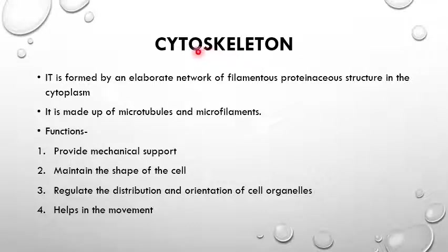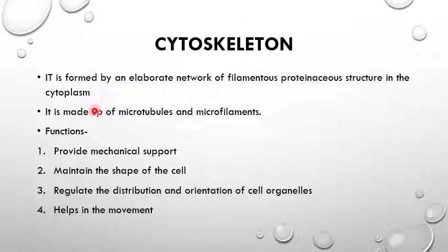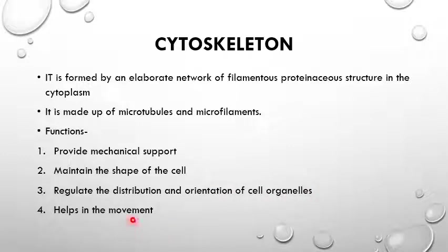The next organelle is the cytoskeleton. It is formed by an elaborate network of filamentous proteinaceous structures in the cytoplasm, made up of microtubules and microfilaments. They provide mechanical support, maintain the shape of the cell, regulate the distribution and orientation of cell organelles, and help in movement.